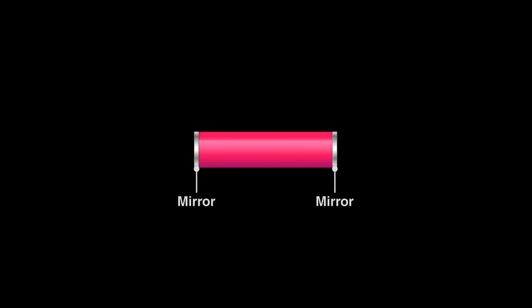Maiman silvered the ends to reflect the light within the ruby cylinder. He made the two ends of the rod astonishingly parallel to each other. From top to bottom, the distance between these two mirrors differs by no more than 200 nanometers. Inside this resonant cavity, two things happen.